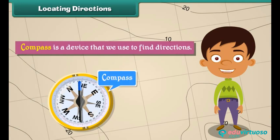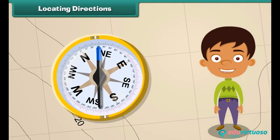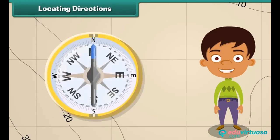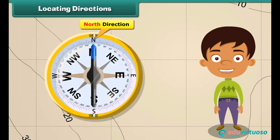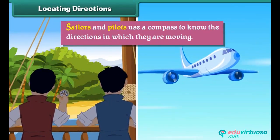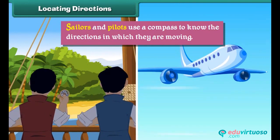A compass is a device that we use to find directions. A compass has a needle that rotates to indicate direction. The head of the needle always points towards north and the tail towards south. Sailors and pilots use a compass to know the directions in which they are moving.